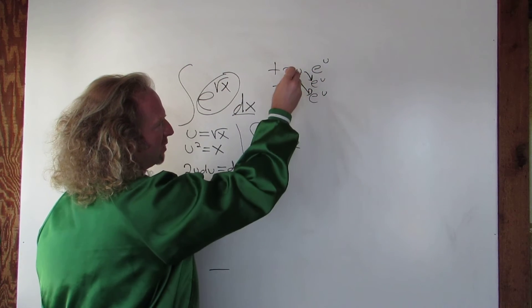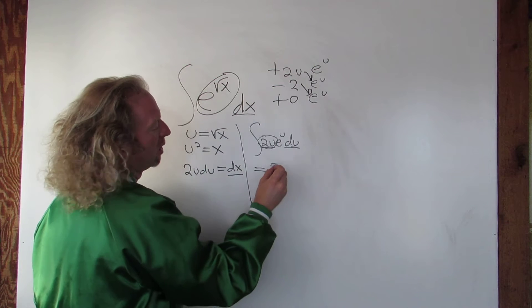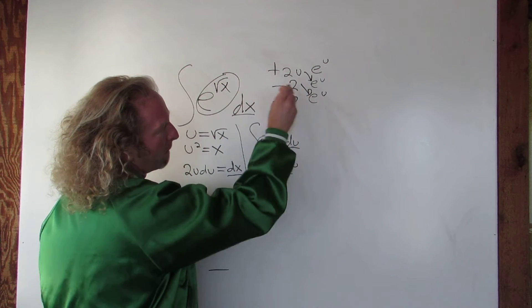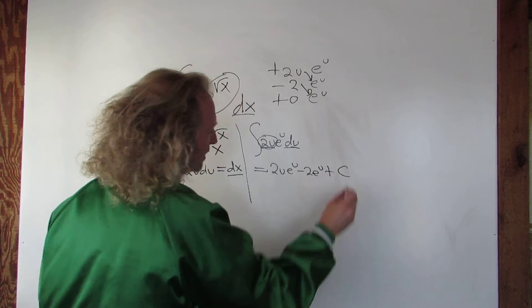That's it. That's the answer. So it would be 2u e to the u minus 2 e to the u plus our constant c.